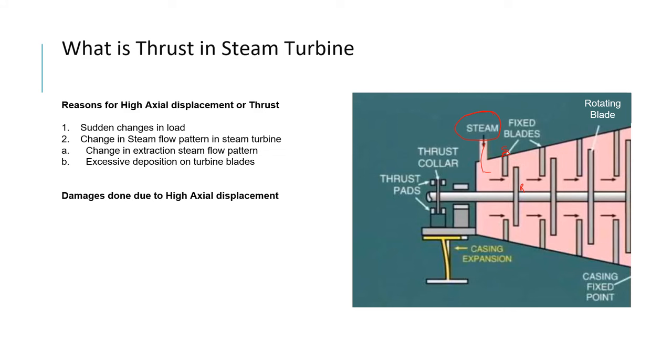So what will happen? You just imagine steam will try to push this. As it is flowing towards this side, it will try to push this. This is the basic understanding of thrust. It is trying to move the rotor in this direction. So that is what the thrust is called.